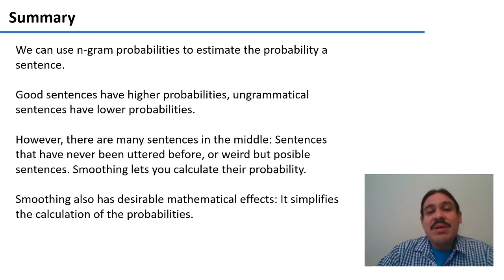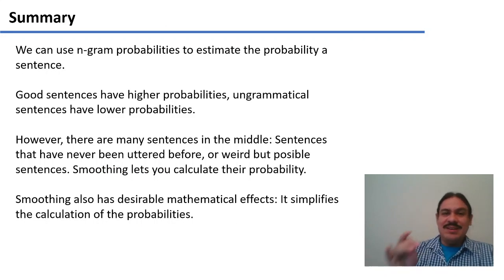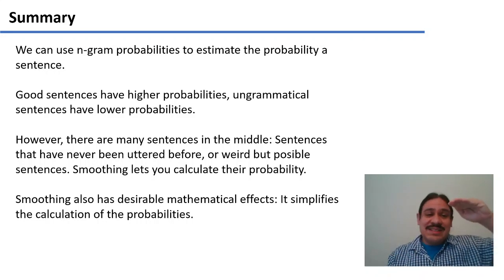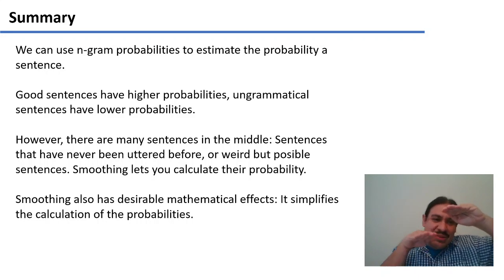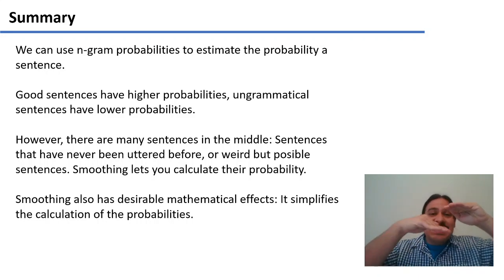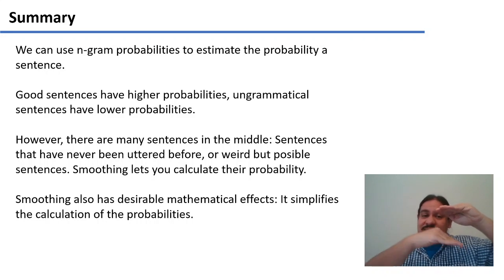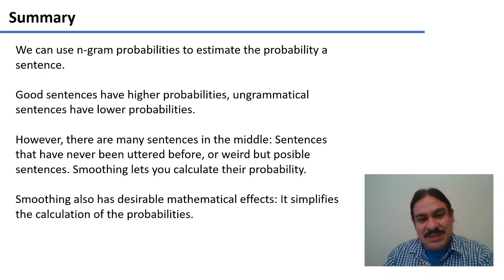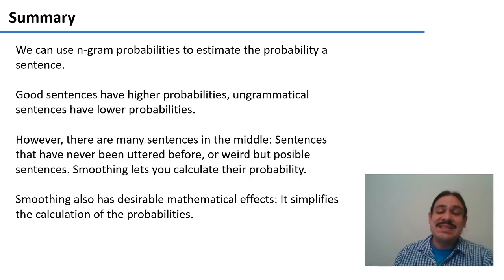So as you can see, we've been using n-gram probabilities to estimate the probability of some sentence. Good sentences have higher probabilities, ungrammatical sentences have lower probabilities. And there's many things in the middle. Sentences that no one has said before. Sentences that are weird, but we can still understand. And smoothing lets us calculate the probability of those sentences. Smoothing also has desirable mathematical properties. It simplifies our calculations. In the next video, we're going to look at n-grams as generators of new sentences. And we're essentially going to be generating language.